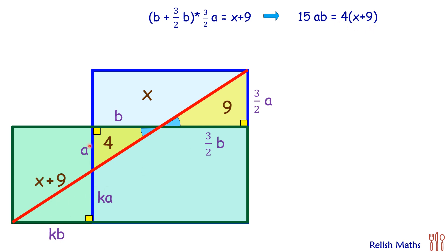Same way for this area, if we write the equation, we will get length times breadth. So this is a plus ka times k times b equals x plus 9. Simplifying it, we will get k times (k plus 1) times ab equals x plus 9.